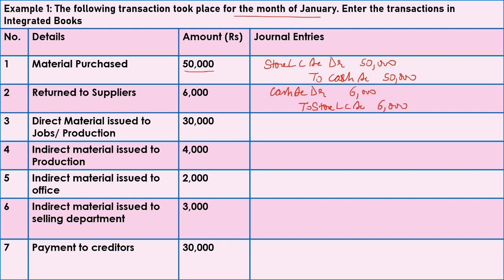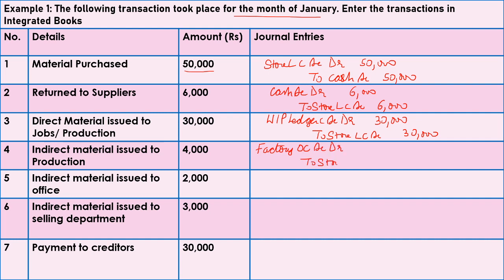Next is transfer from store to different departments. Whether material is direct or indirect, Store Ledger Control Account is credited because credit what goes out, and the receiving department is debited. For direct material transferred to production, we debit WIP Ledger Control Account and credit Store Ledger Control Account — Rs.30,000. For indirect material issued to production, we debit Factory Overhead Control Account and credit Store Ledger Control Account — Rs.4,000.